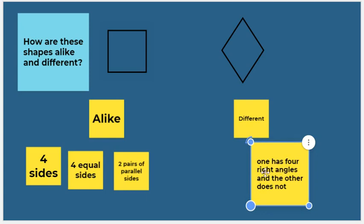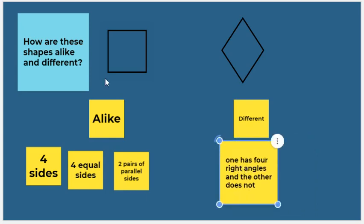Bonus point if you can tell me the names of these two shapes: this one is a square and this one is a rhombus. I hope this short review helped you refresh your memory about geometry. Please head over to the Google Doc, complete the geometry test, and submit it to me. Thanks, guys!